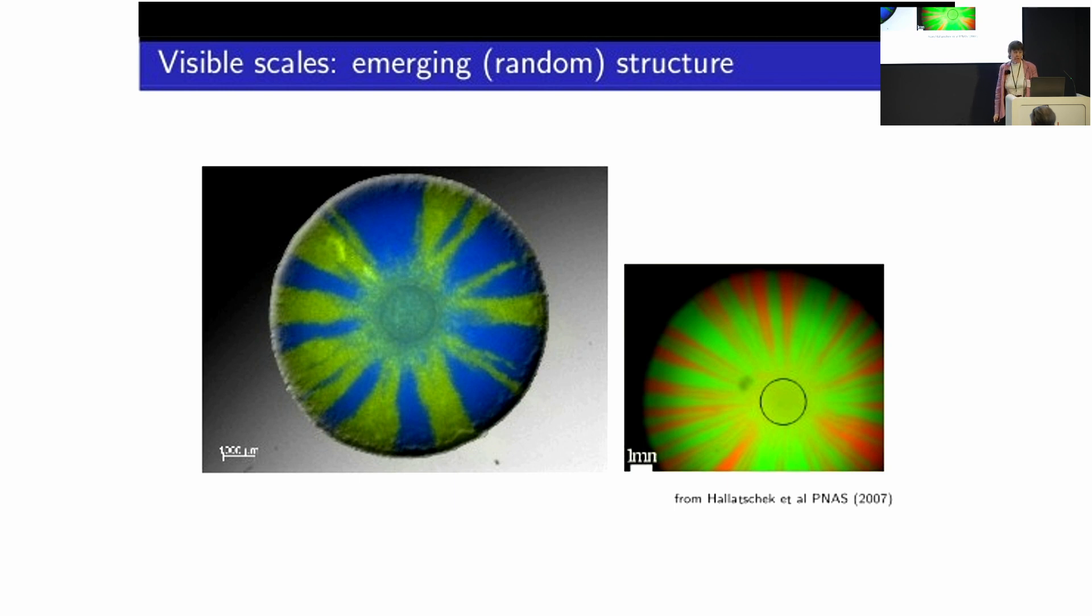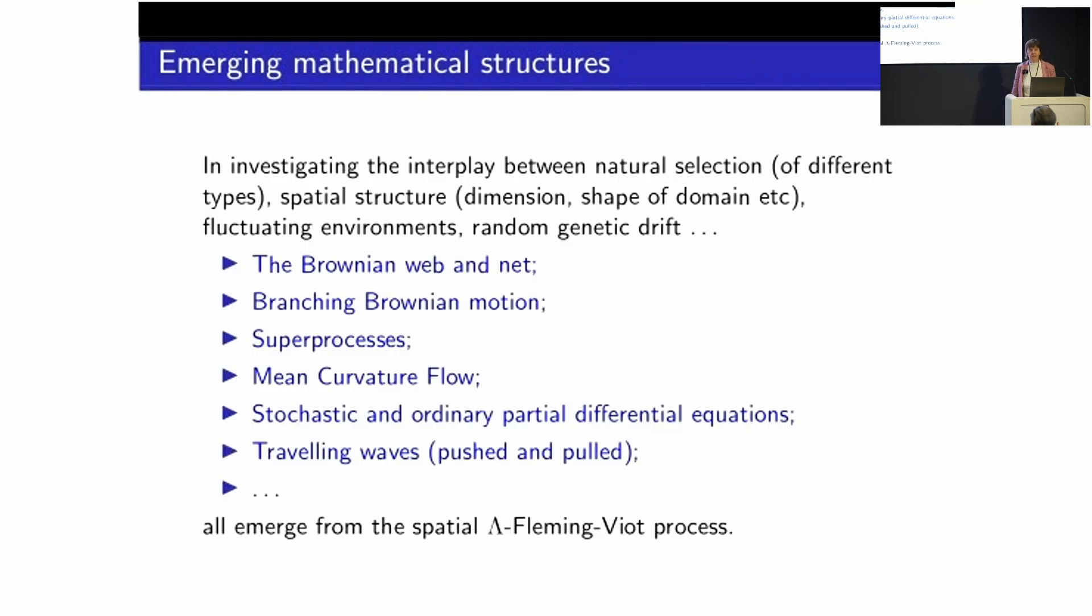So how range expansion and the randomness due to reproduction interact with one another. And so armed with that, we decided to go on and do some mathematics. And many people, including Jono in the audience, in fact, have worked with this model. And in investigating the interplay between natural selection, spatial structure, the dimension and shape of the domain in which population is evolving, fluctuating environments, random genetic drift, just trying to understand how those things interplay within our model. I've just given you a list of things that people study in analysis, PDE and probability theory. And all these things emerge when we're trying to understand the genetics of a population evolving according to this process. And some of them are really pretty. Mean curvature flow is really pretty.